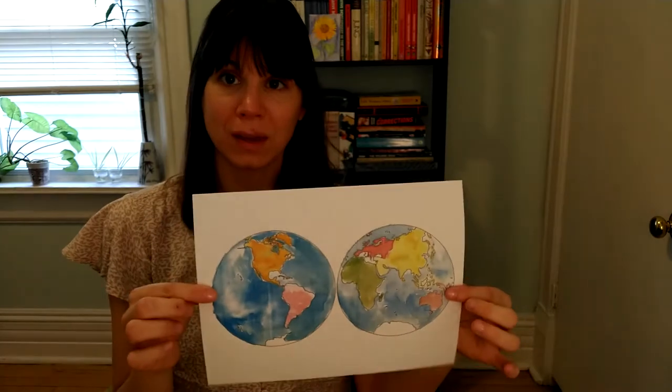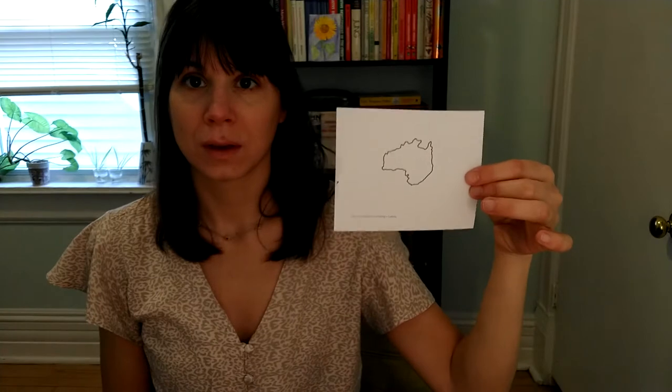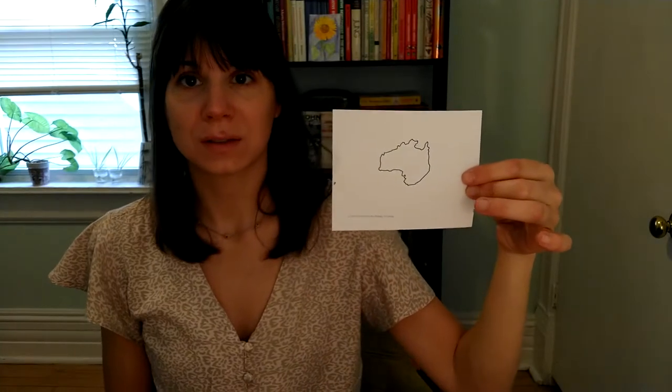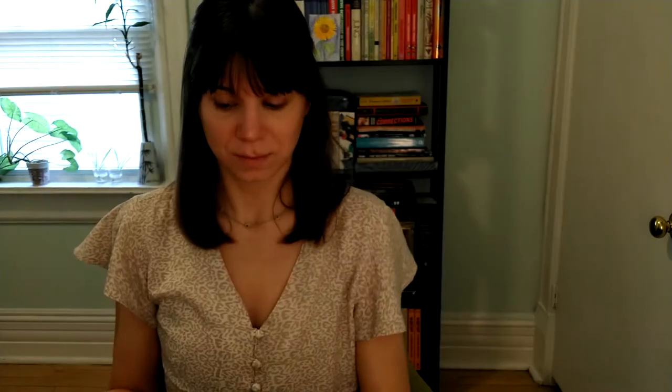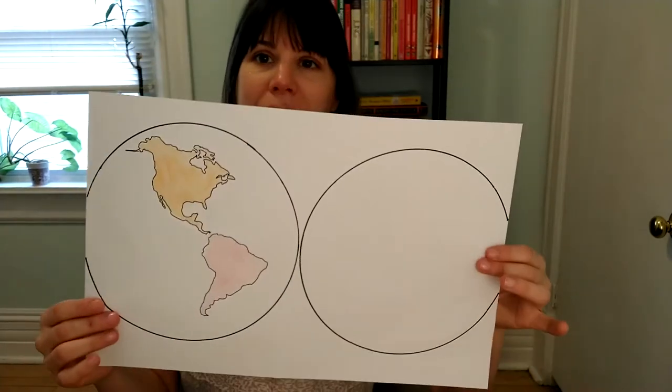So we're going to make this map today. You will need templates of the continents to color and cut out, a glue stick, scissors, and you're also going to need the large map paper. It looks like this. Okay, let's get started.